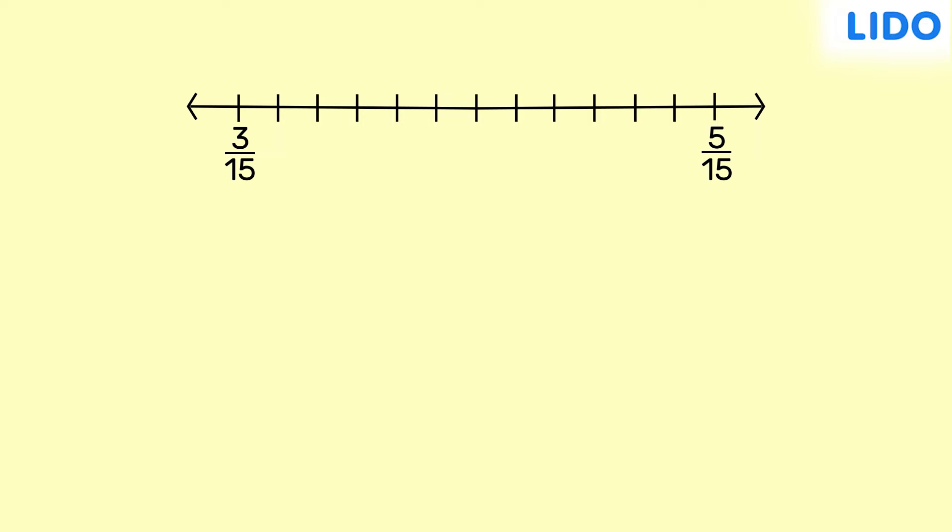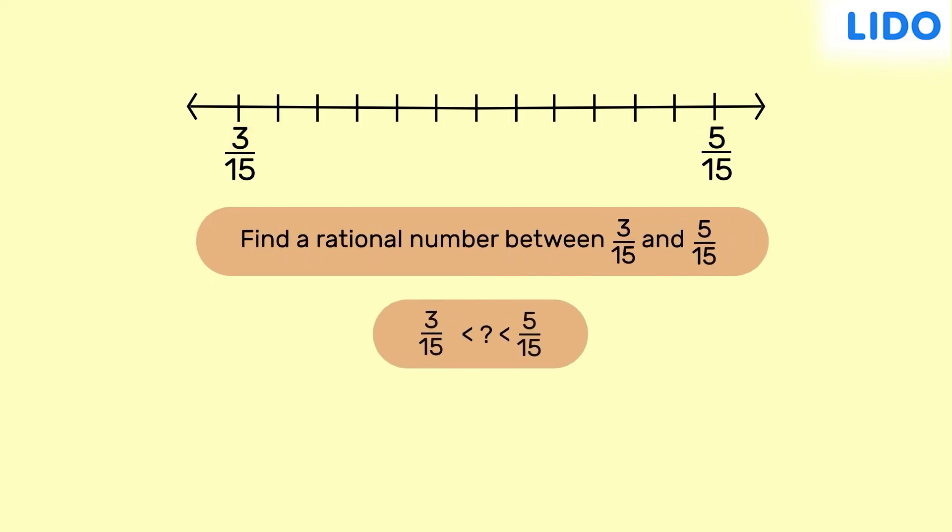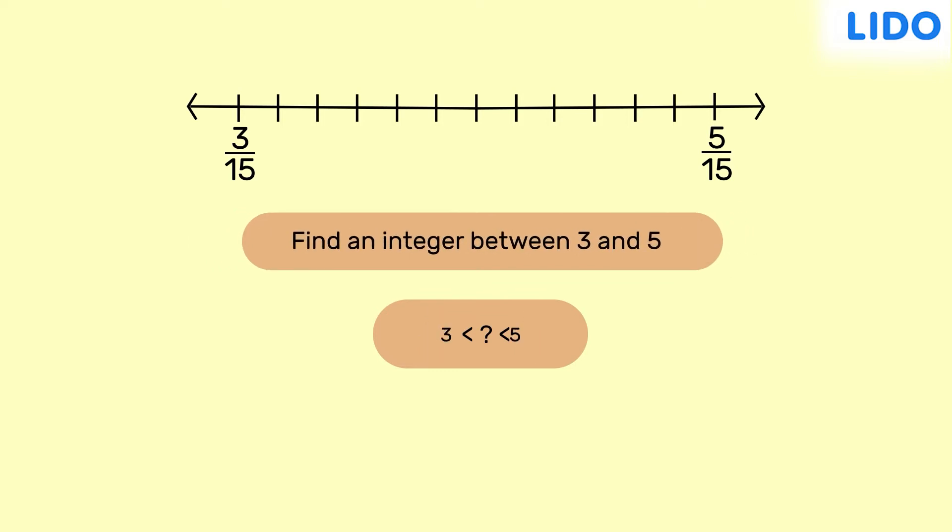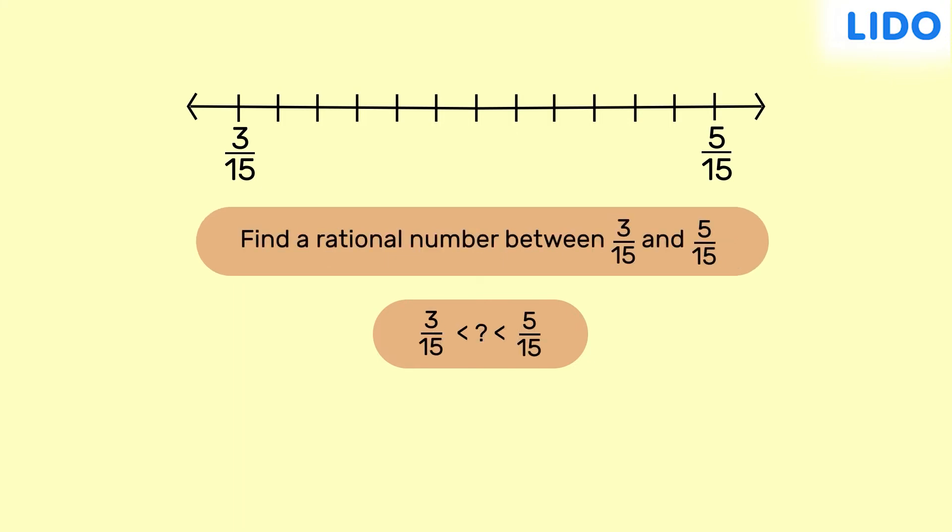Look at the numerators here. We have 3 and 5. Since both fractions are now like fractions, the question can be modified to find an integer between 3 and 5, and that integer is 4. So, the rational number between 3 by 15 and 5 by 15 is 4 by 15. And therefore, we can say that one rational number between 1 by 5 and 1 by 3 is 4 by 15.